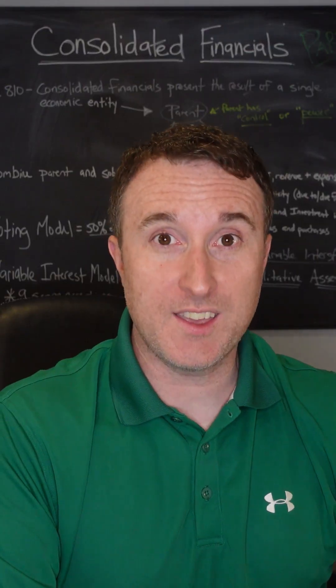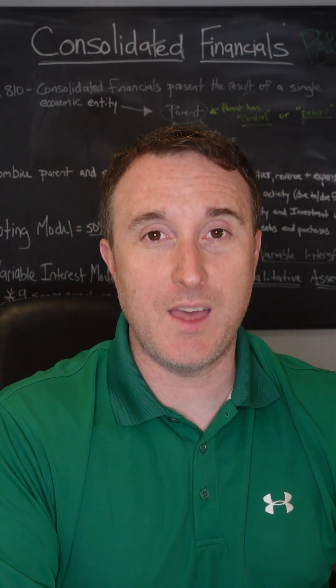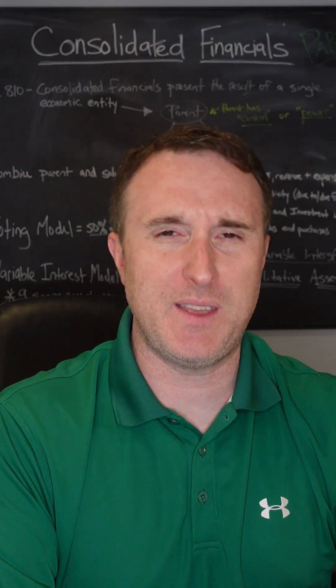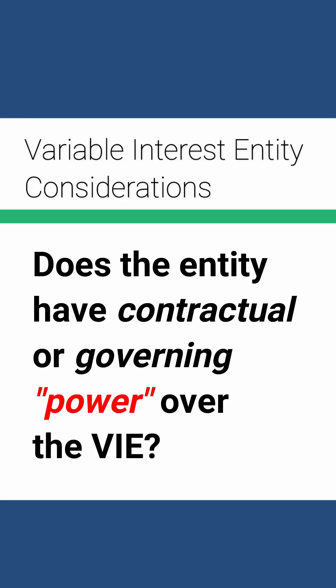There are three characteristics of a VIE that might result in it being consolidated into the parent. One, the parent has decision-making or governing control over the entity, even though they don't have the ownership. That might result in that VIE getting consolidated.